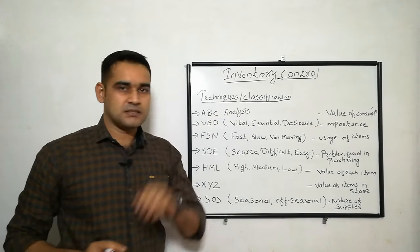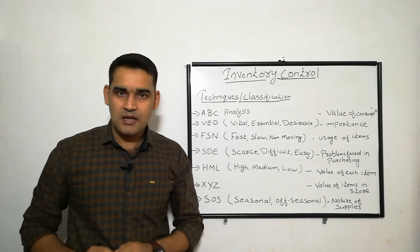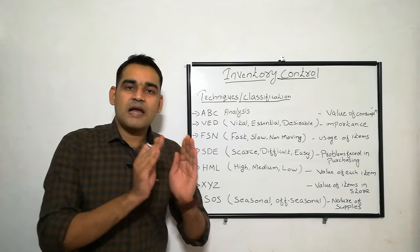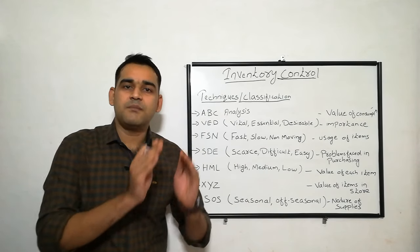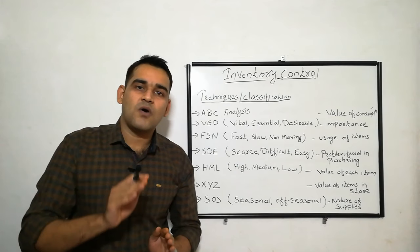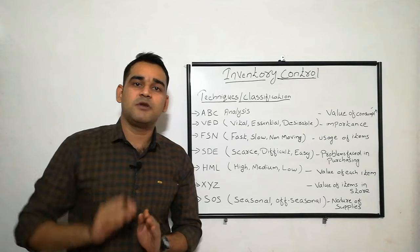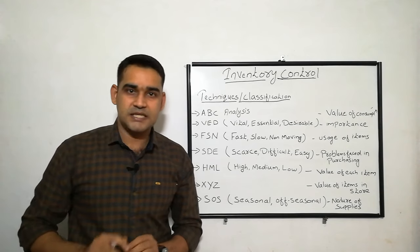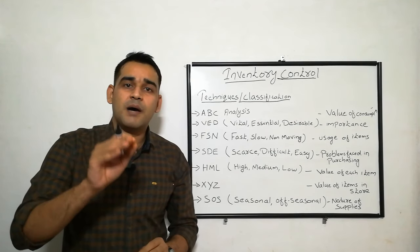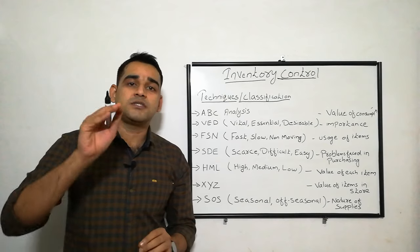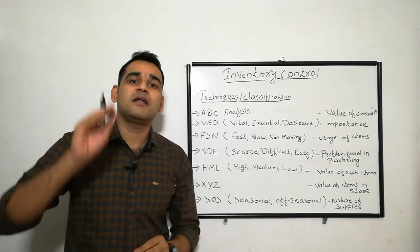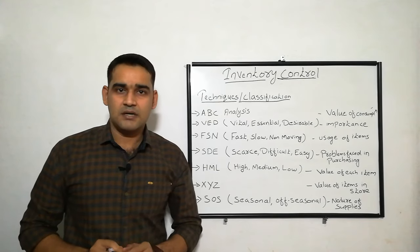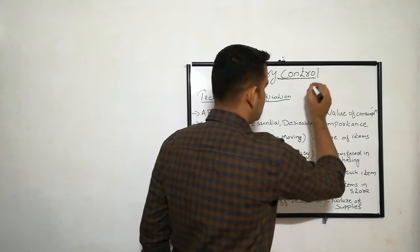The first one is ABC analysis, popularly known as 'Always Better Control.' ABC analysis has three categories: A item, B item, and C item. A item means high cost and less quantity — the quantity will be very less but the cost will be very high. For example, ventilators or MRI machines — very few in number in a hospital but very high in cost. That comes under A category. B category means medium cost items, and C category means low cost items.